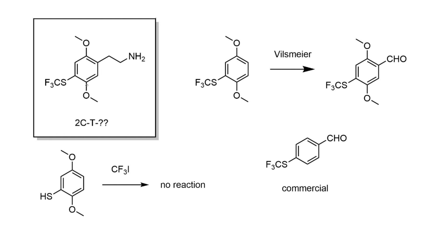Another class of compounds to consider is trifluoromethylthio groups — the SCF3. This compound is actually mentioned by Shulgin in his commentary in PiHKAL when making the last of the 2CT series. He took the thiophenyl compound and attempted to react it with gaseous iodotrifluoromethane, but observed no useful product. This is perhaps not surprising because iodotrifluoromethane doesn't really serve as a source of electrophilic trifluoromethyl groups — its reactivity is generally more important in radical systems. But there are other ways with more modern chemistry to access the SCF3 group.